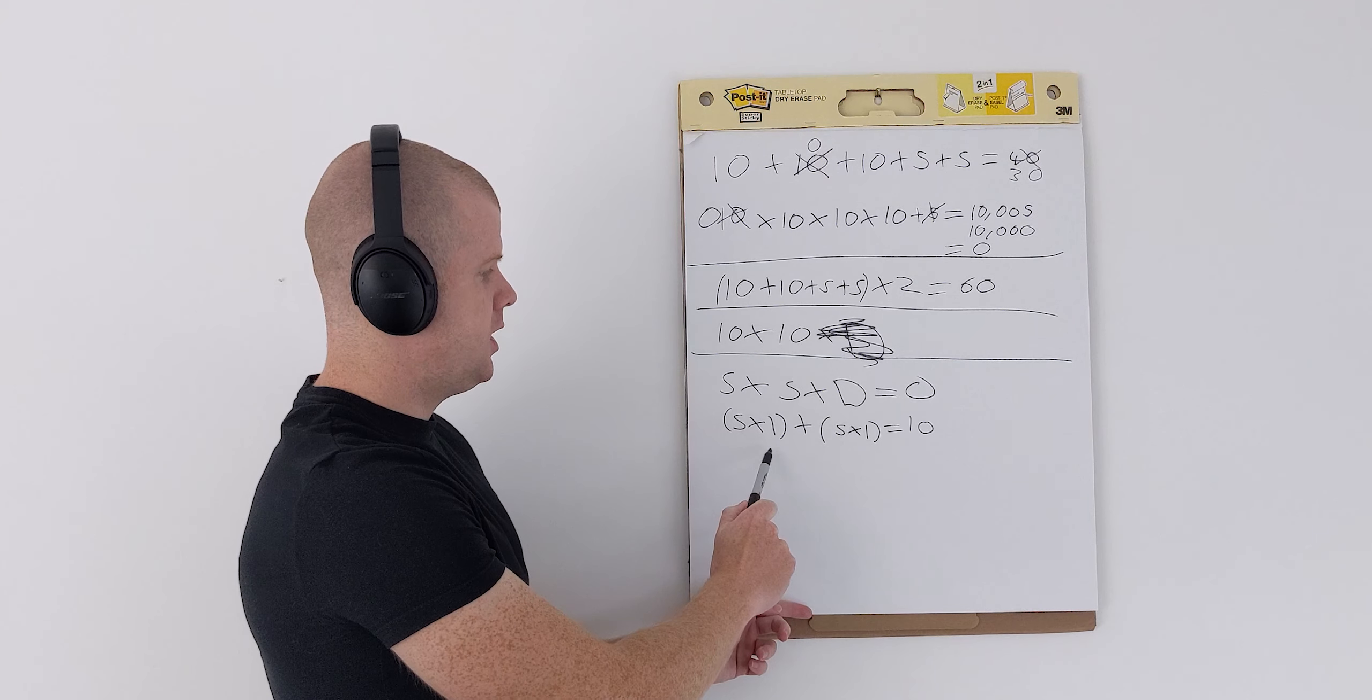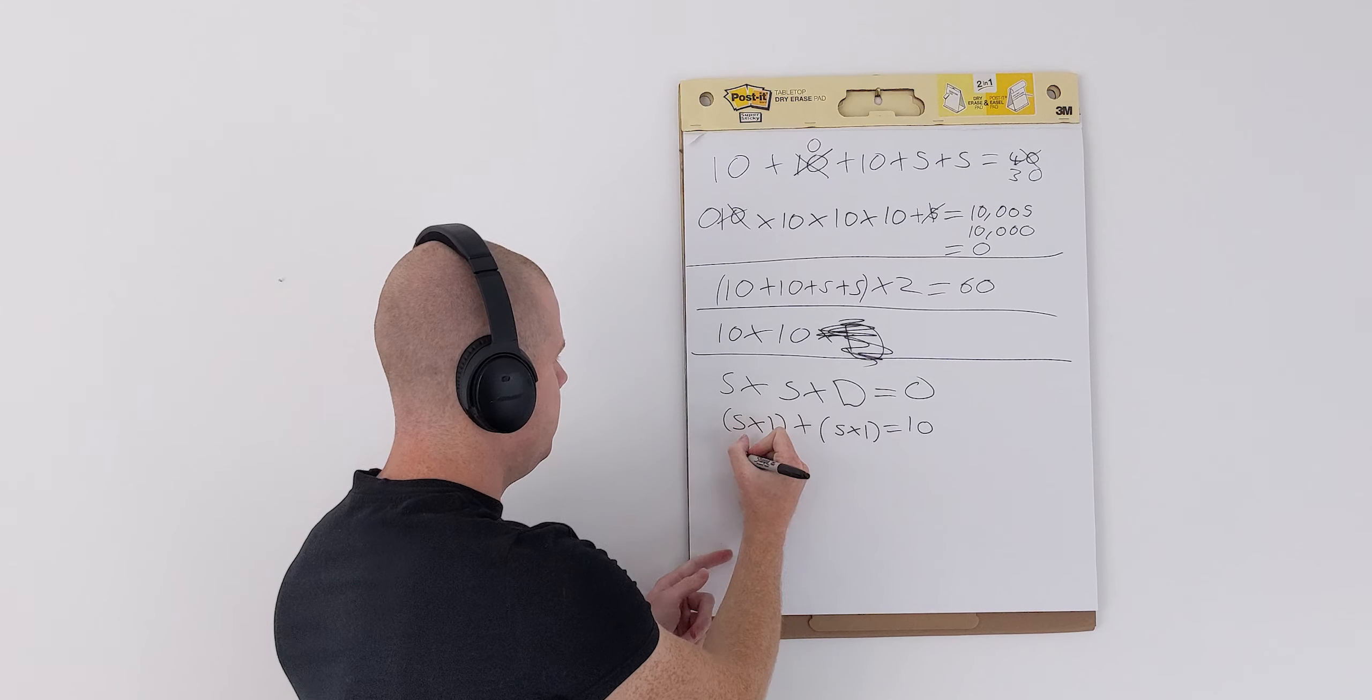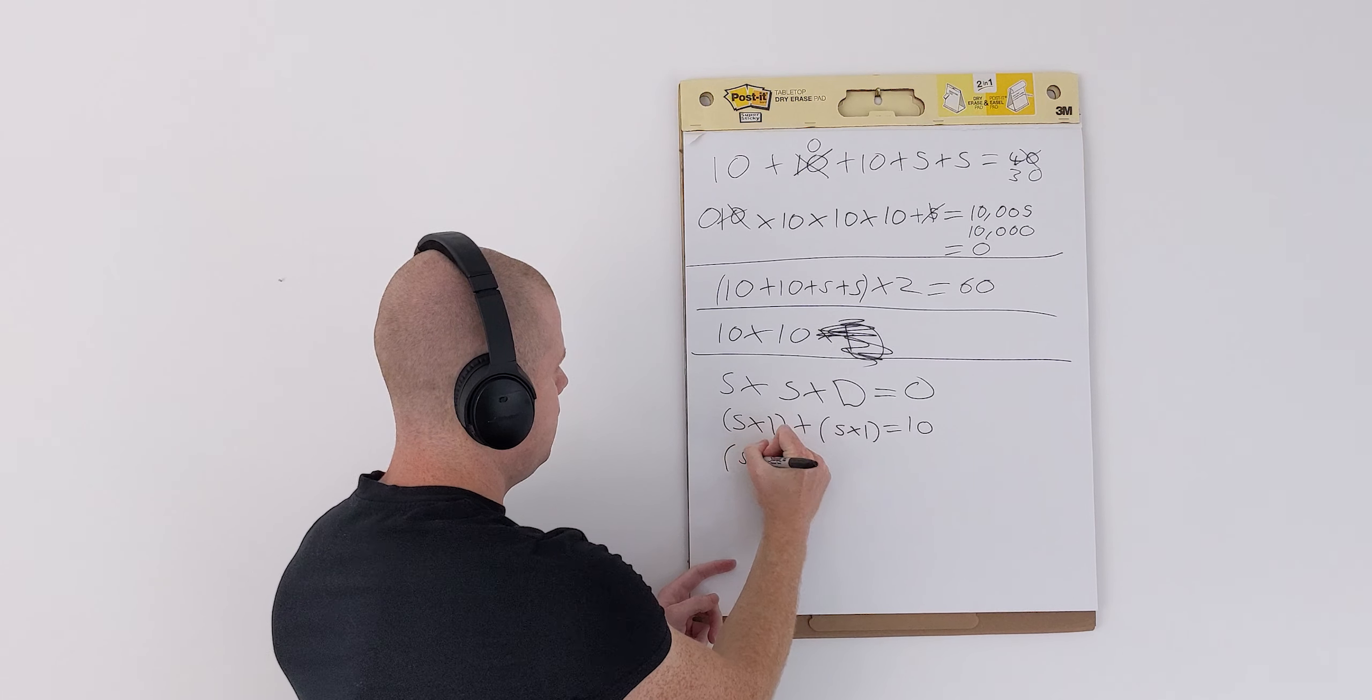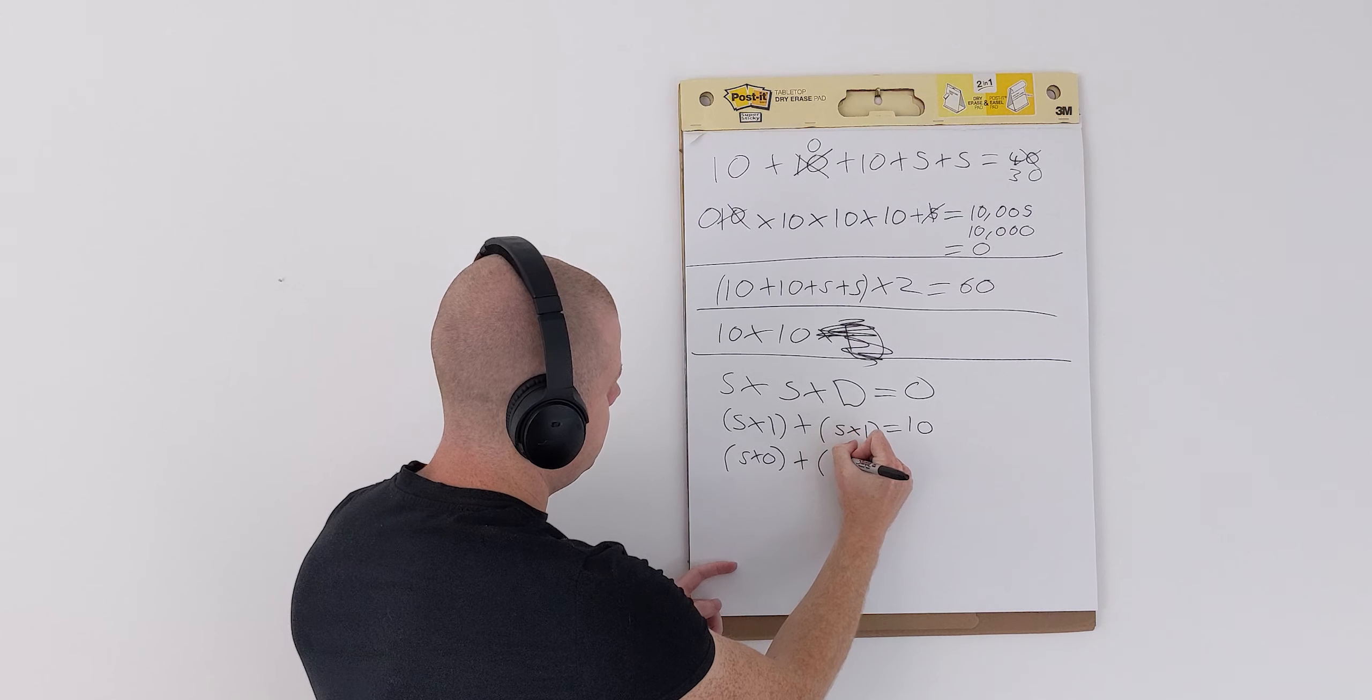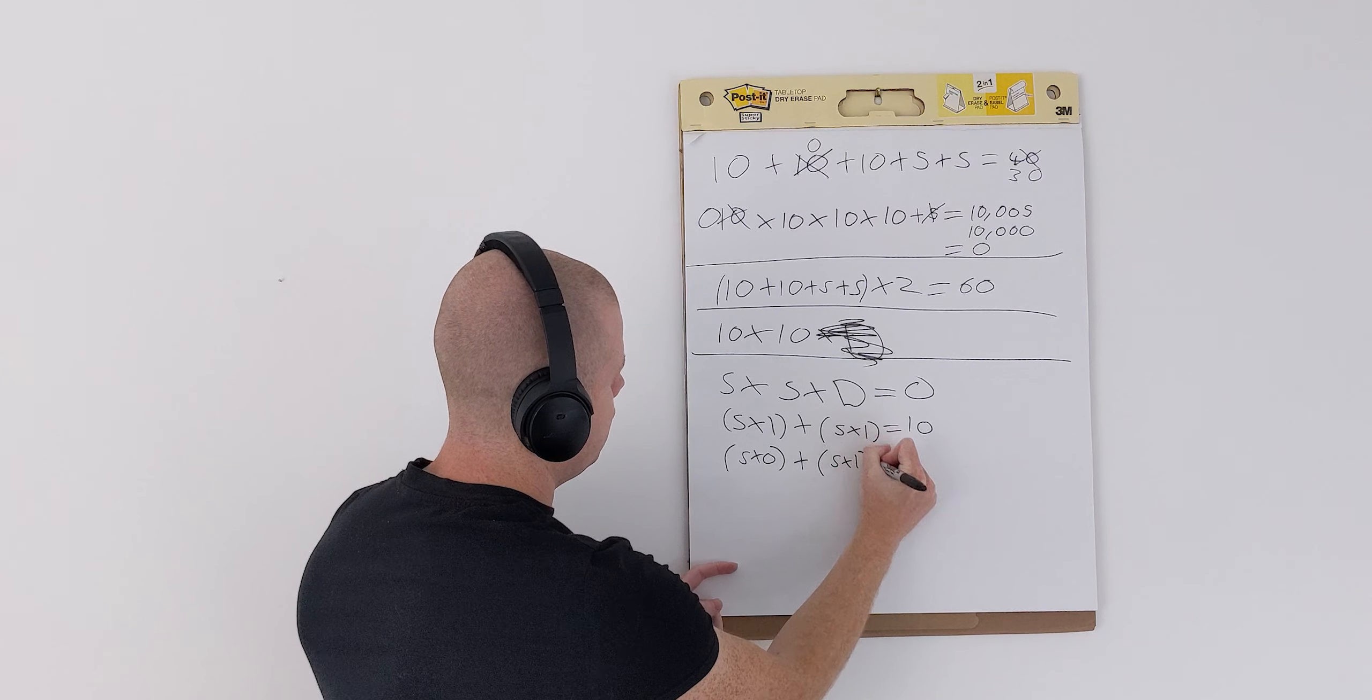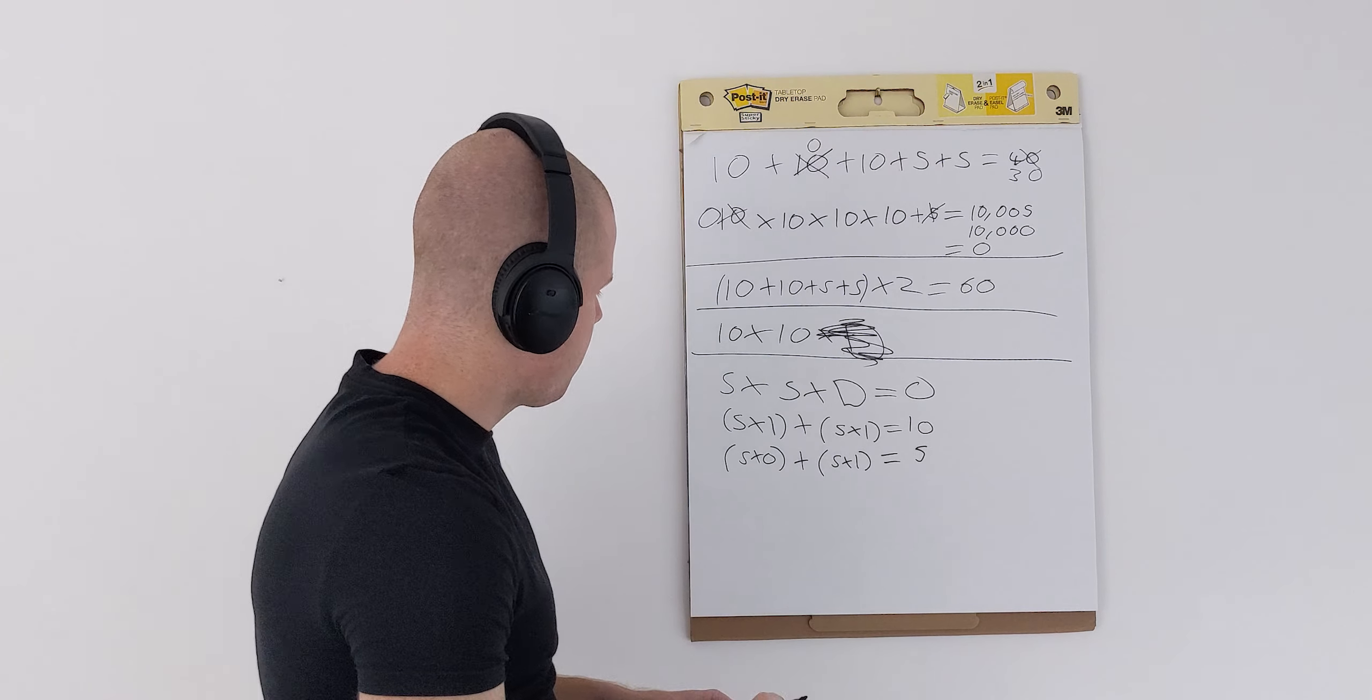And if something happens to go wrong with our front-end server, we have 5 times 0, and then we have plus 5 times 1 for our back-end, and that equals 5.